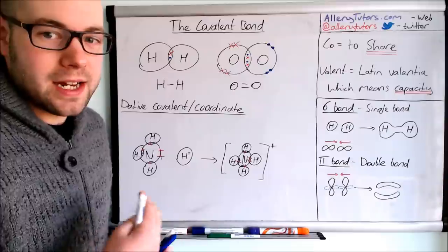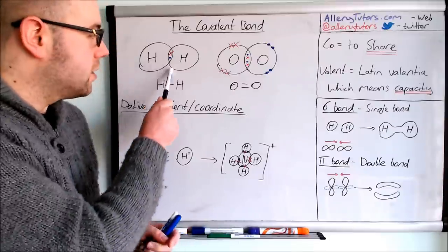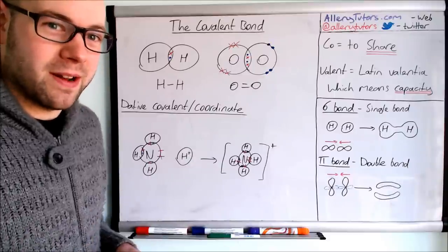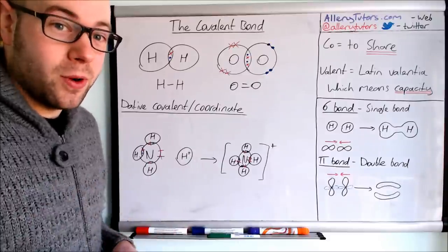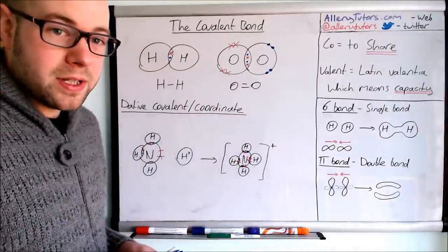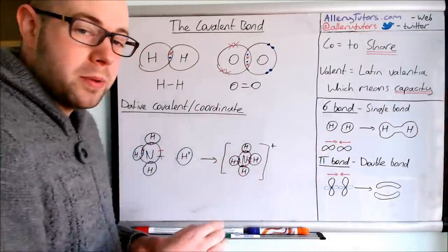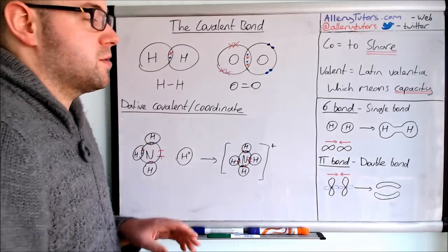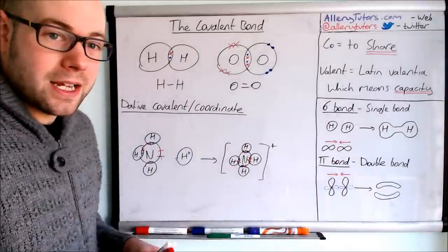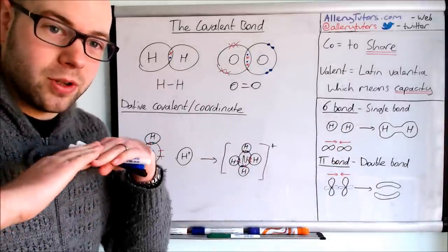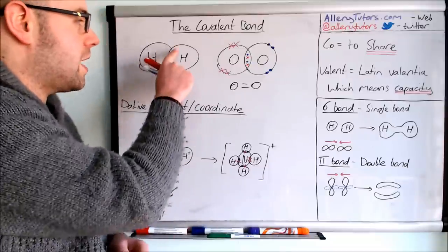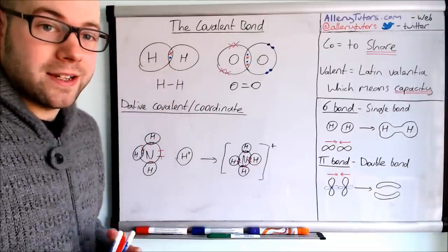Now let's extend into the A-level content. The single bond has a new name at A-level: it's called a sigma bond. A sigma bond is where the orbitals overlap each other, forming a shape that looks like a dumbbell. When the electron orbitals overlap, there is a sharing of paired electrons in the middle — that is the covalent bond.